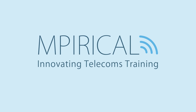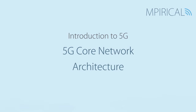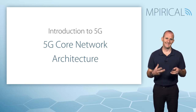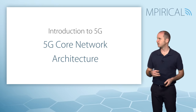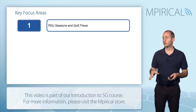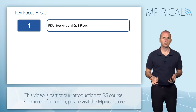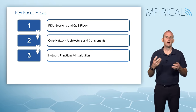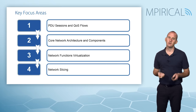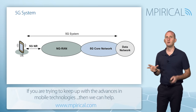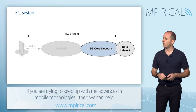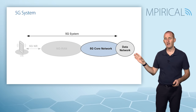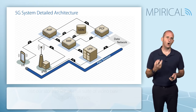As with the radio access network, the 5G core network is a new architecture. In this session we're going to consider what that architecture actually involves, starting off with PDU sessions and quality of service flows, then the actual architecture and key components, including network functions virtualization and network slicing. This is our high-level 5G system — we've already considered our new radio and next-generation radio access network, so our key focus here is the 5G core network.